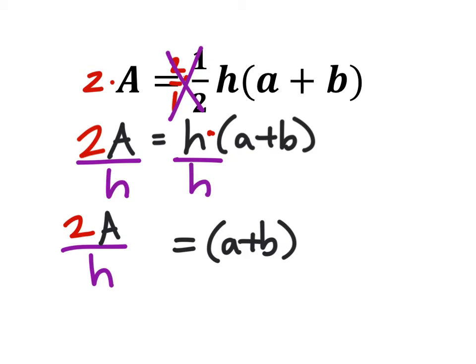And now we're left with this: 2a over h equals a plus b. And I can get rid of the parentheses now which should make this a little bit less confusing.